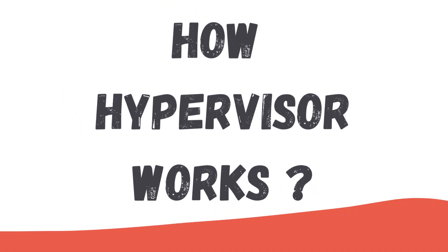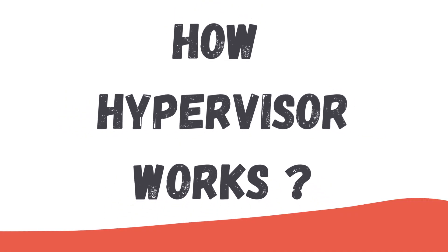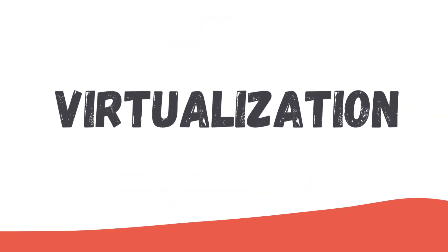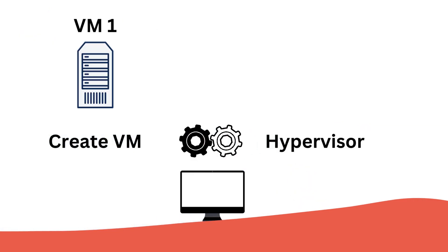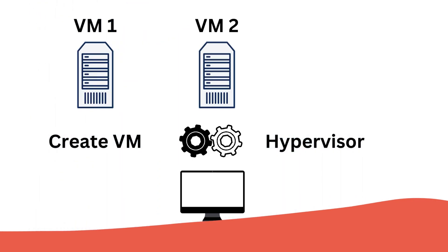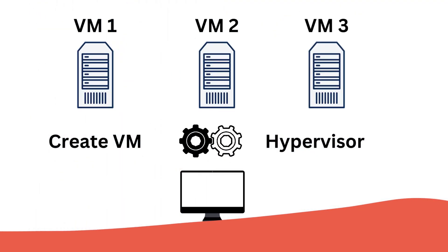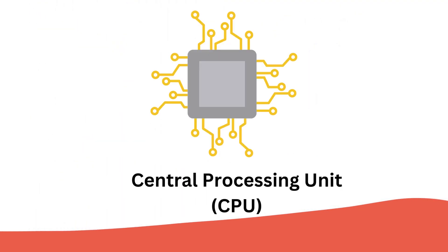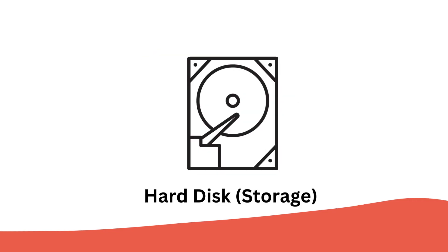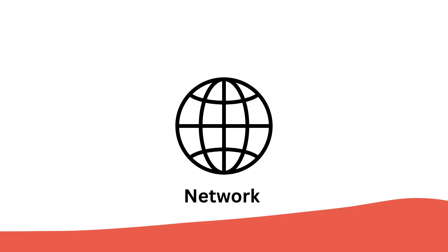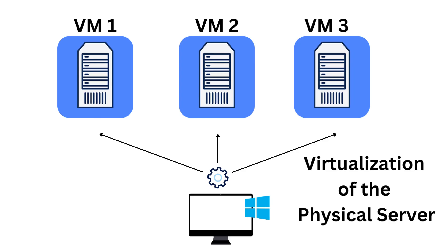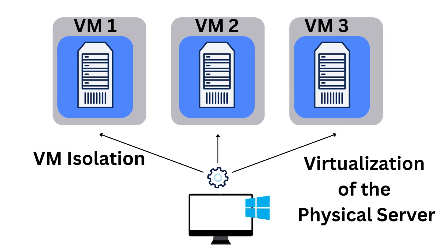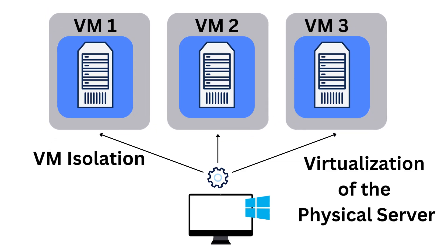Let us see how a hypervisor works. First, Virtualization: The hypervisor creates virtual machines by emulating hardware, such as CPU, memory, disk, and network interfaces. Each VM operates as if it has its own dedicated hardware, isolating them from one another.